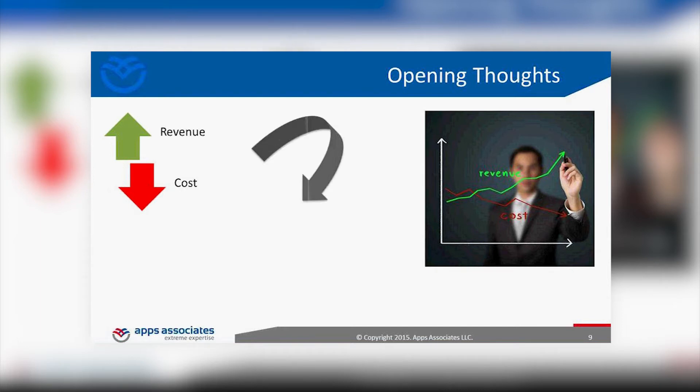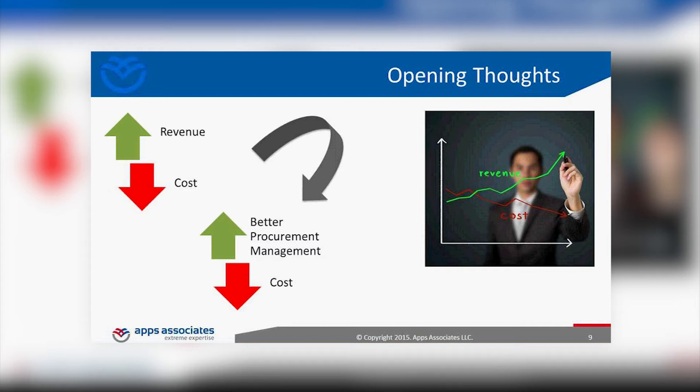If the procurement department is not optimized or doesn't have good access to data to make timely decisions — such as knowing how many days ahead to place an order to avoid manufacturing delays — that's a critical gap. A better procurement process has a direct result of reducing cost, making it a very important business function.